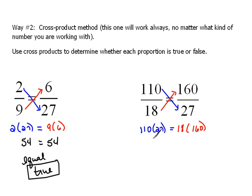Well, 110 times 27 is 2970. And 18 times 160 is 2880. Those are not the same thing. So, this is a false statement. We could not reduce these fractions to the same thing.